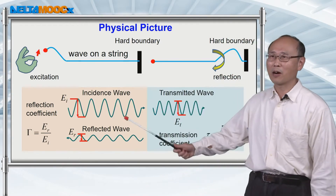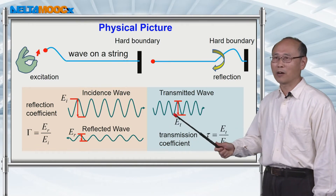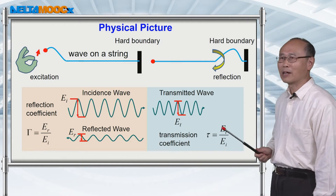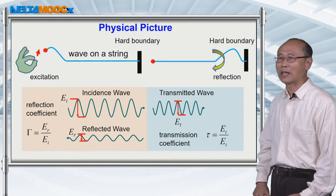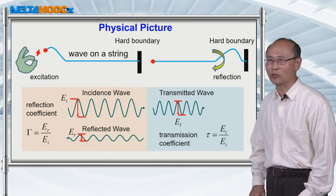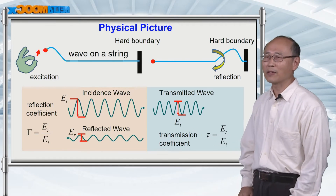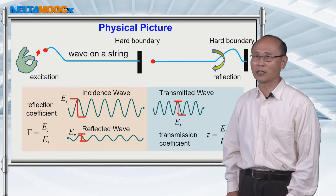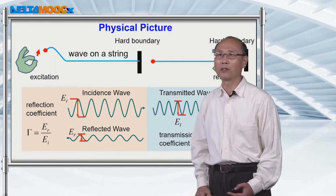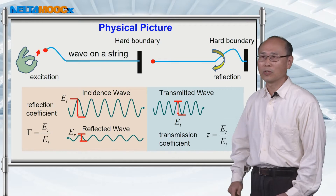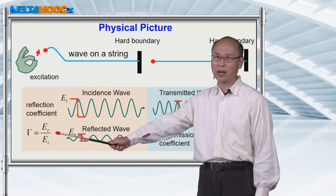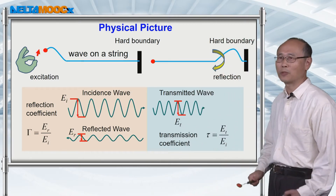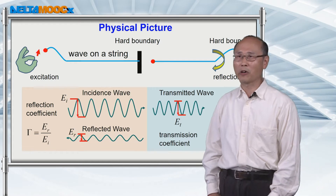Sometimes the wave can propagate through the boundary with an attenuated amplitude. The transmitted amplitude to the incident amplitude ratio is defined as the transmission coefficient, from which you can deduce the transmitted power as a fraction of the incident power. In this lecture, we'll be calculating the reflection coefficient, because if we know it, we can deduce the transmission coefficient from energy or power conservation.